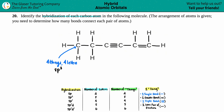Now let's do the next carbon. What's going on with that carbon? It's got a single bond - that's one thing, another single bond - two things, another single bond - three things, and one more single bond - four things total. Four things, four letters: sp3.